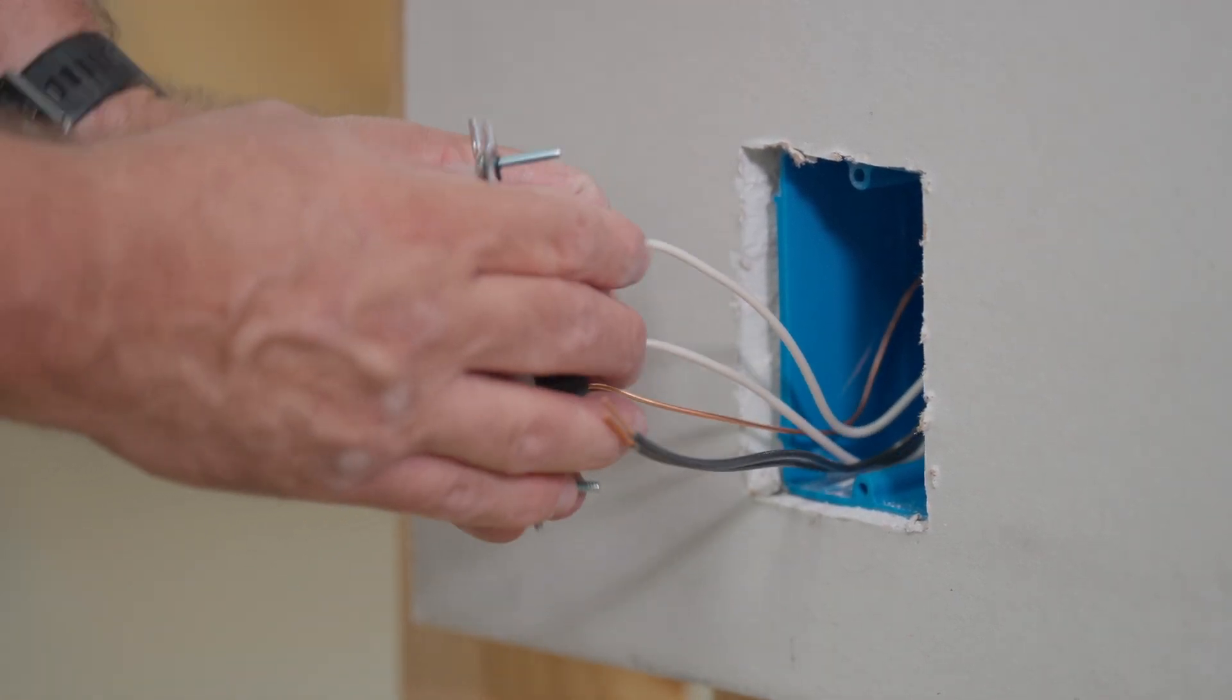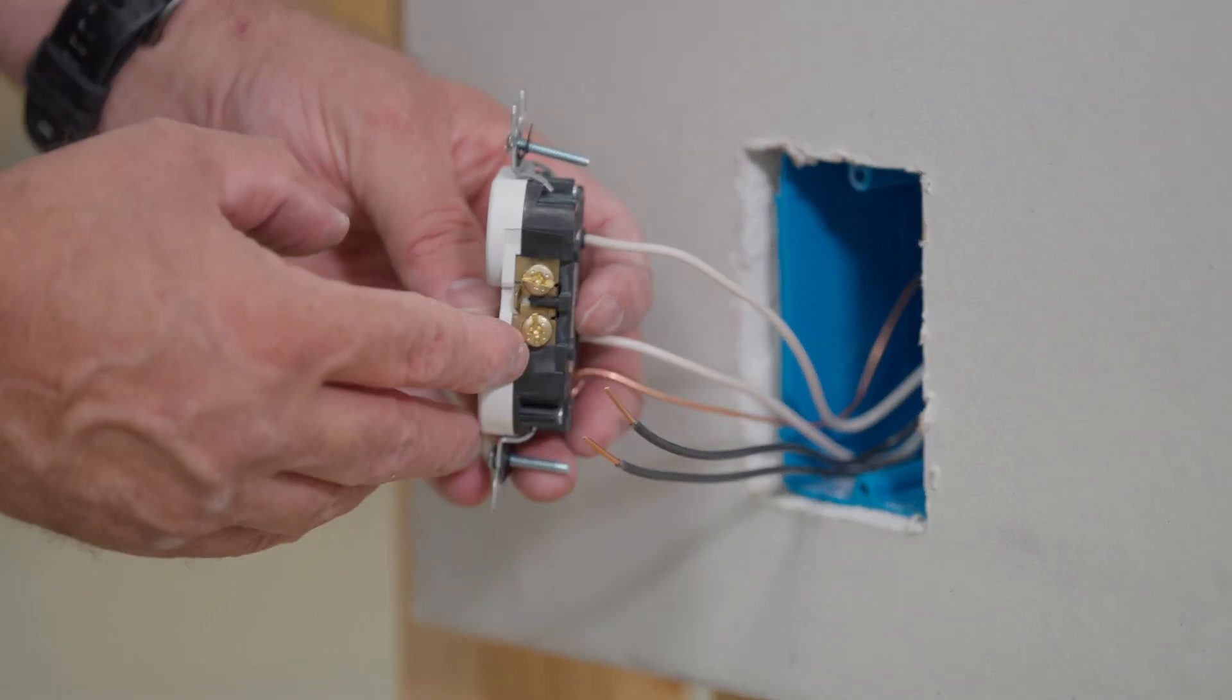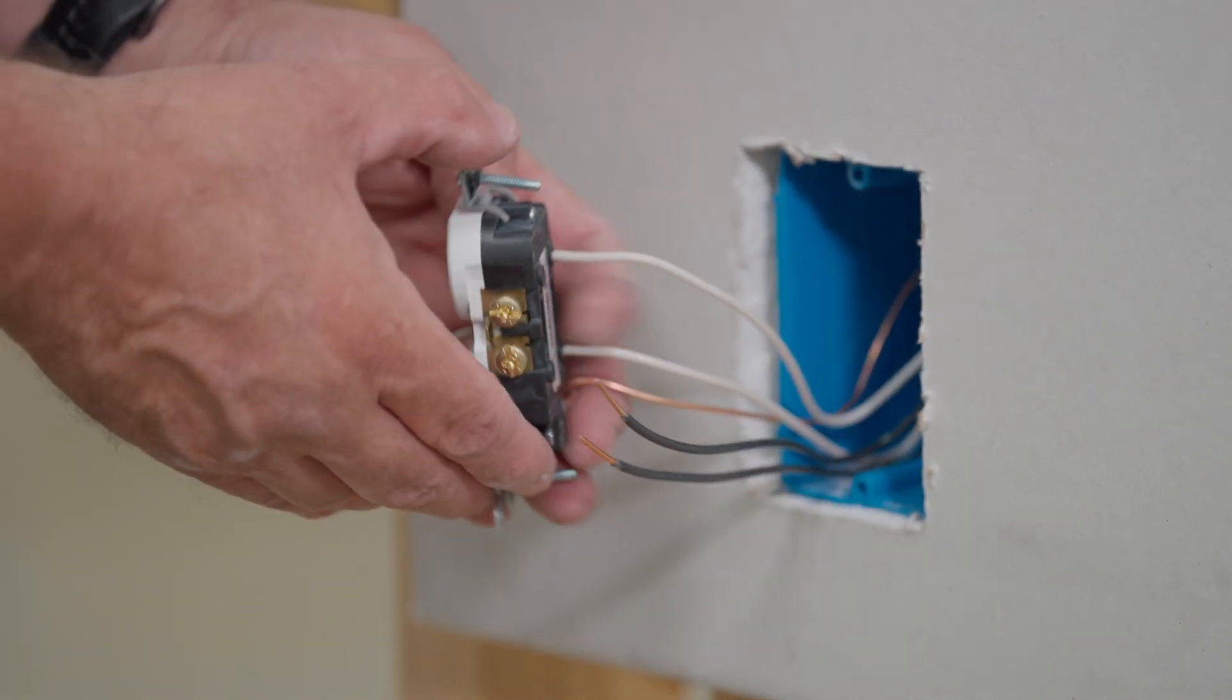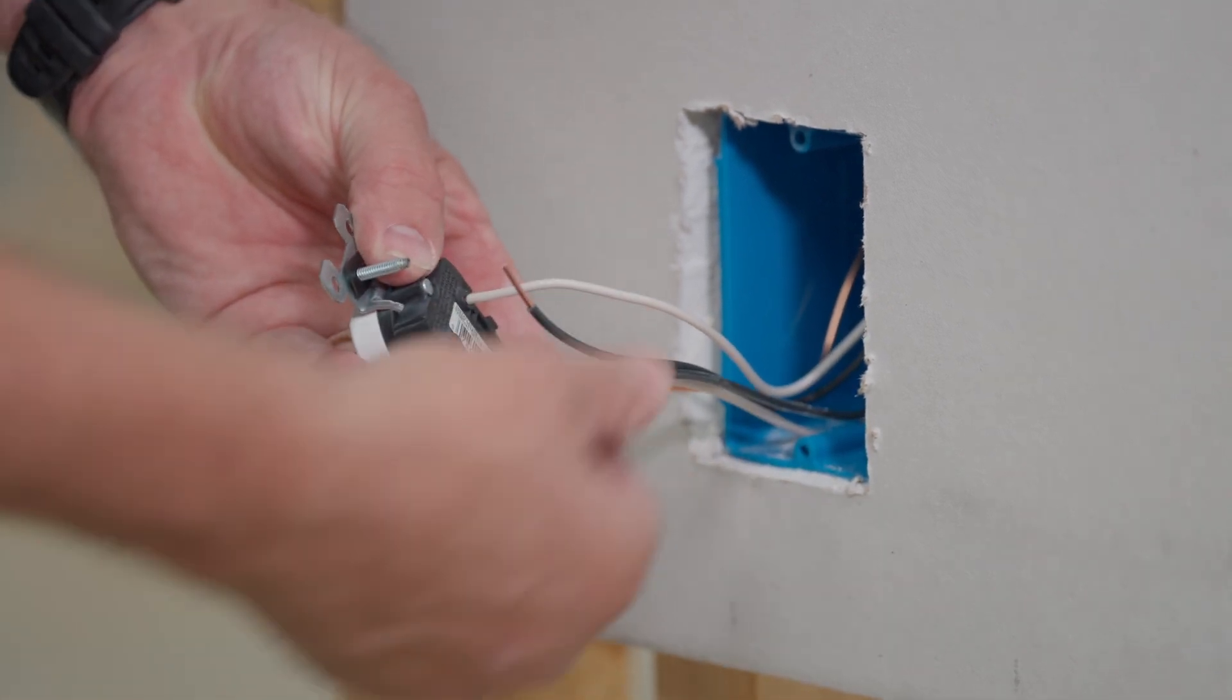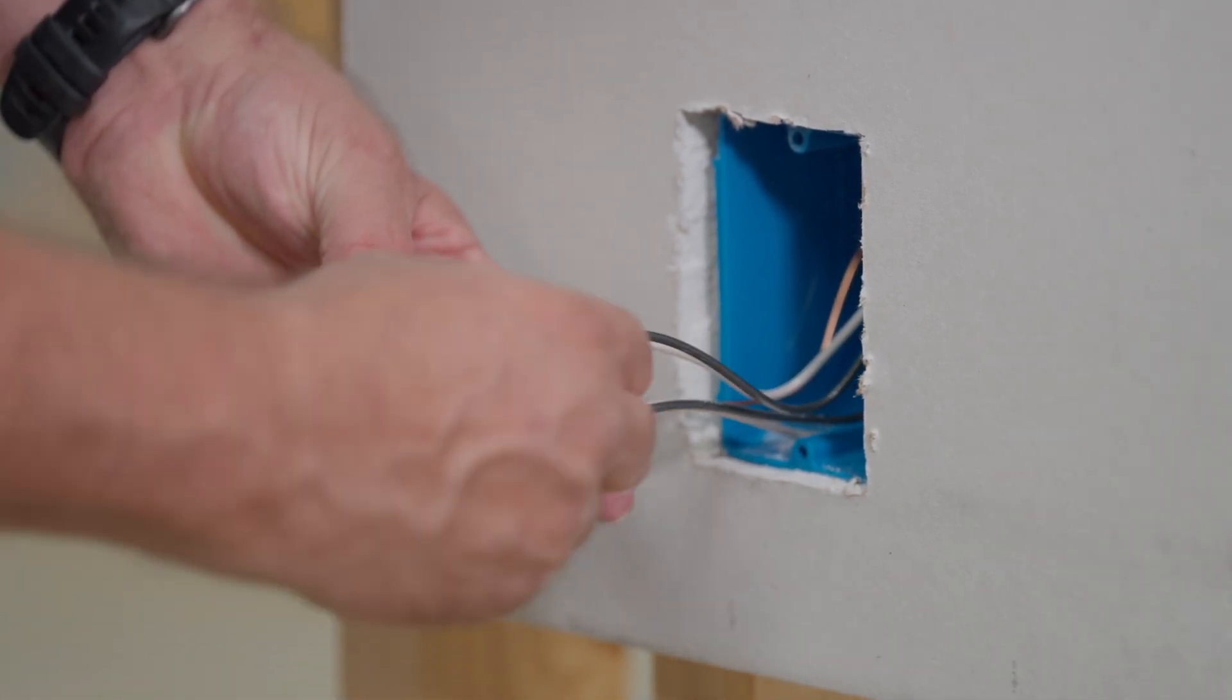Now you turn it over. And this is the brass. See the brass side over here. The brass side is where the hot conductors go. So what you do is you take this and you push it in. And then you take this wire and you push it in.